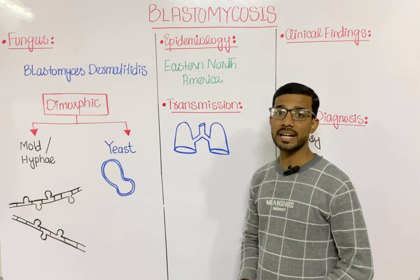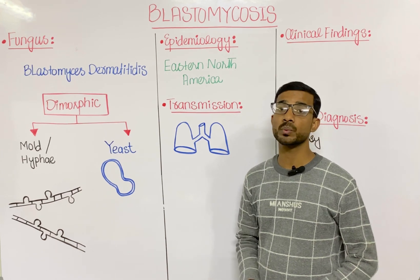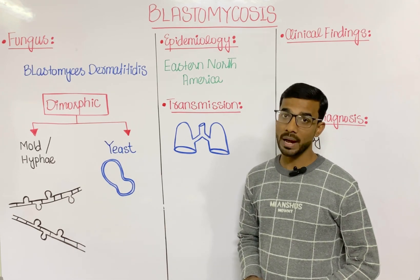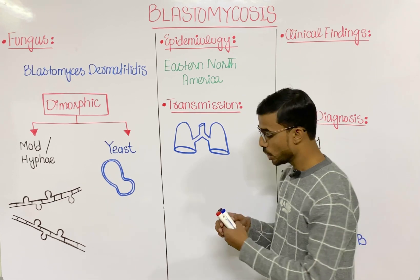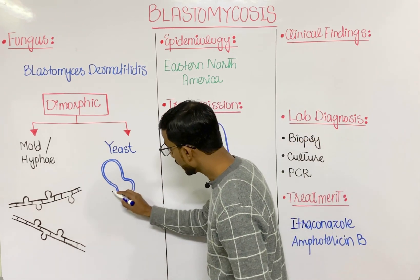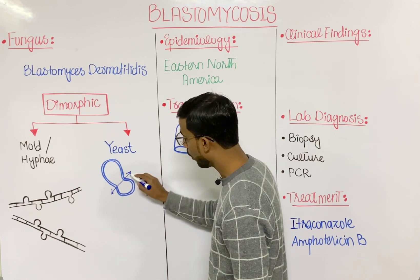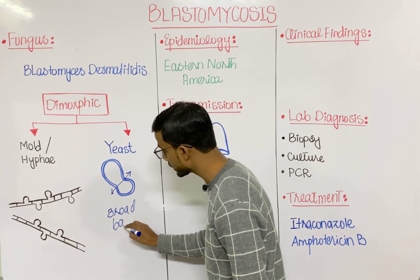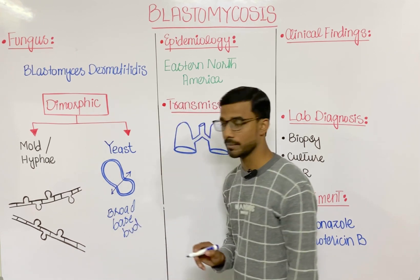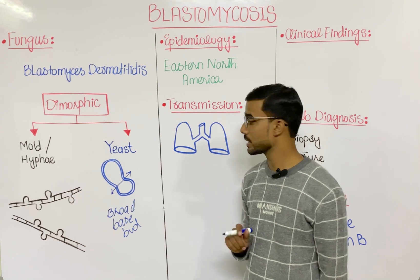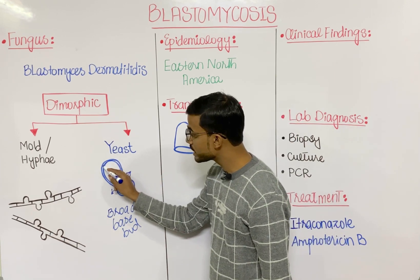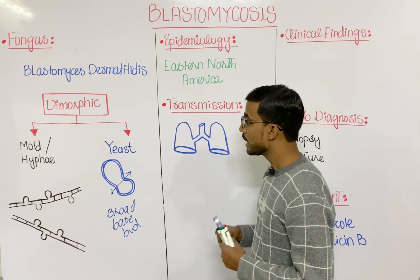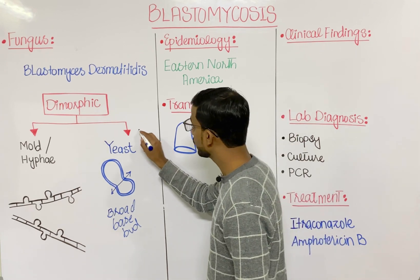Yeast is a unicellular form that divides through the process of budding. The most important feature of the yeast of Blastomyces is the broad-base bud — you can see here the budding point. Another important feature is the presence of a thick wall around the yeast.